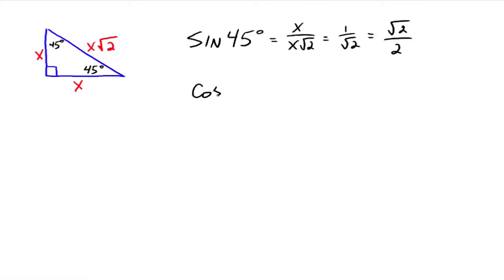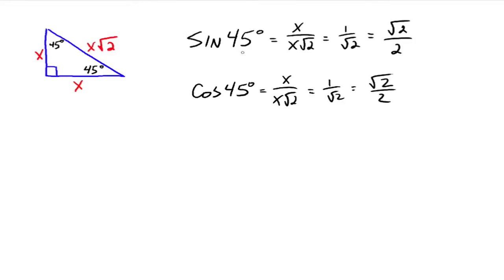What about the cosine of 45 degrees? The cosine is adjacent over hypotenuse, so you get x over x radical 2 again, which goes to 1 over the square root of 2, so you get the same value. What do you think the tangent of 45 degrees is? It's opposite over adjacent, so it's 1. The tangent of 45 degrees is always 1. The sine and cosine of 45 degrees are both always the square root of 2 over 2.